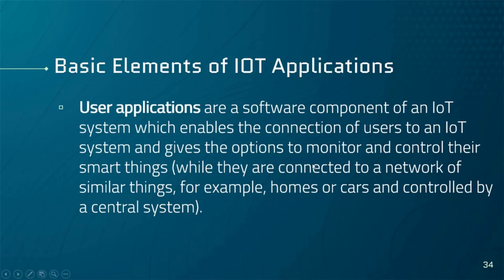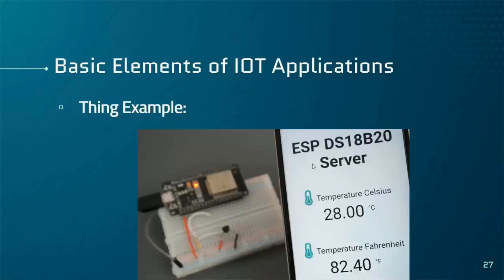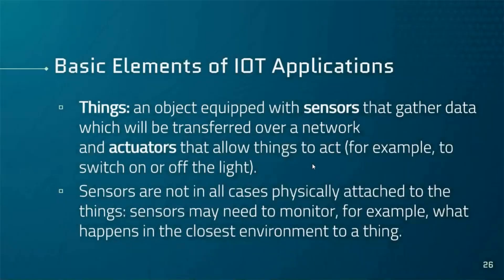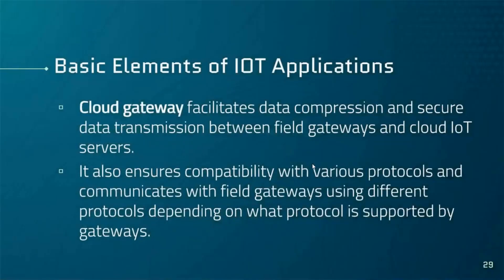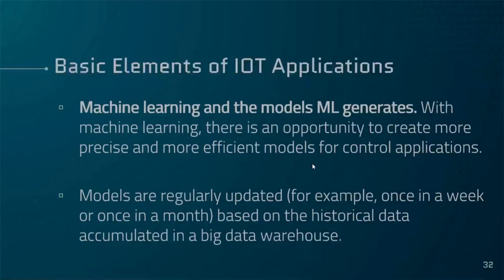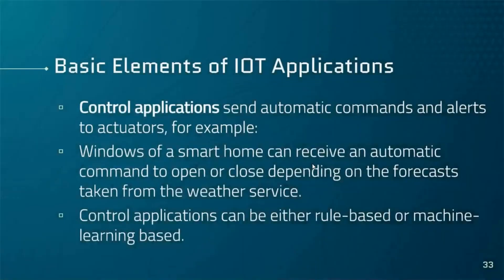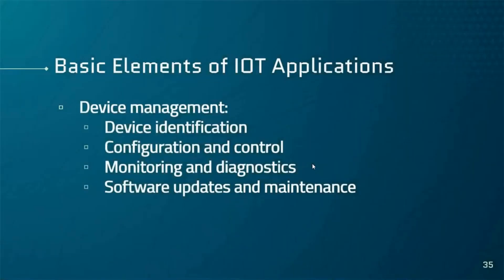To recap, the basic elements of an IoT application are: things, sensors, gateways, cloud gateways, big data warehouses, data analytics, machine learning models, control applications, and user applications. Next, we'll study device management.